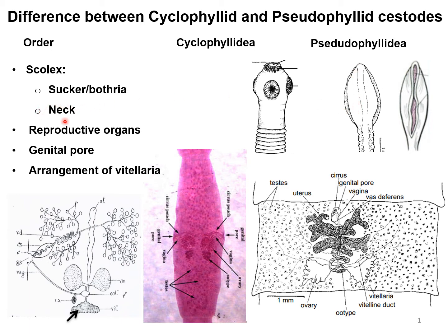The next differential point is the neck. In cyclophyllate parasites the neck is well developed and conspicuous, but in pseudophyllate cestodes the neck is less developed or inconspicuous.